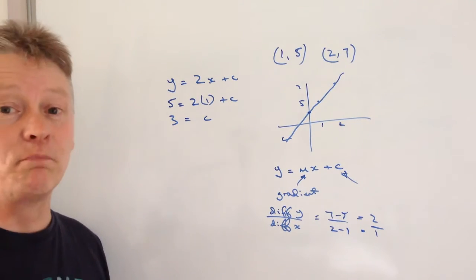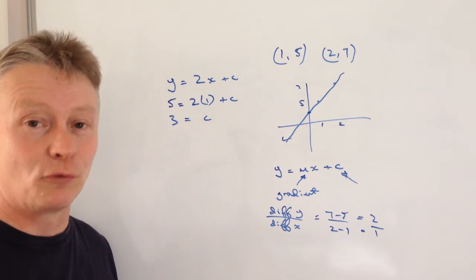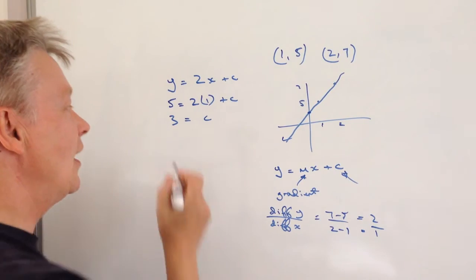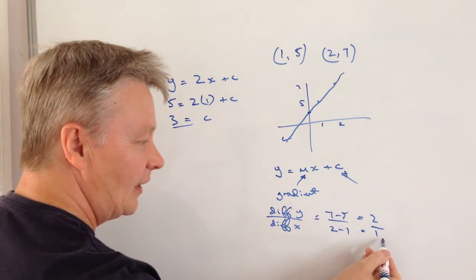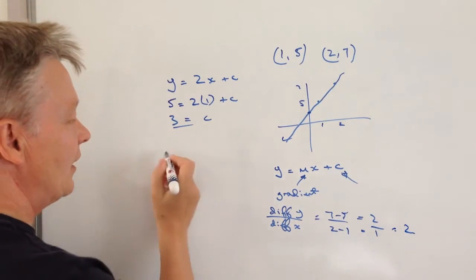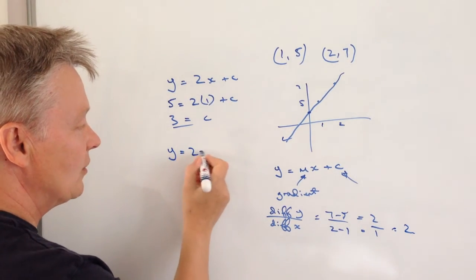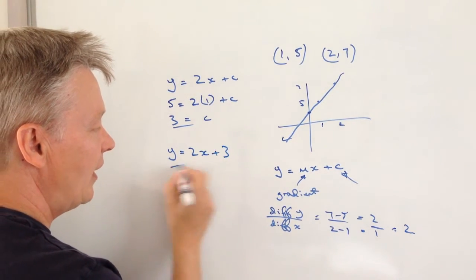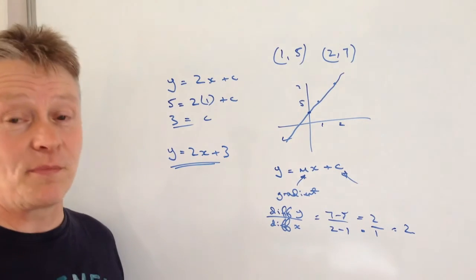So I've now got the component bits that I can put together and write out the full equation. I've got the value of c, the value of the gradient, and I can simply write y equals 2x plus 3, and that will be the answer to this particular question.